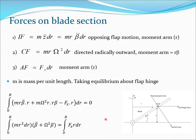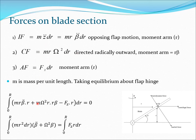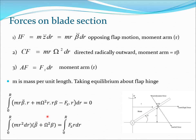We take the moments of these three forces at the flap hinge and integrate from 0 to R, setting the total moment equal to zero. Multiplying each force by its respective moment arm — r for inertia, r·beta for centrifugal, and r for aerodynamic — and integrating gives us the governing equation. We bring the beta-double-dot and beta terms to the left-hand side and the forcing term to the right-hand side.